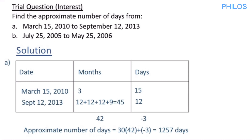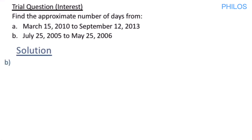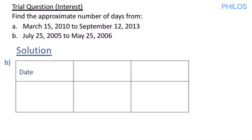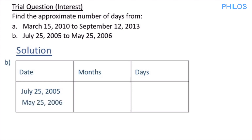Now let's solve part B. Part B asks us to find the approximate number of days from July 25, 2005 to May 23, 2006. Draw the table again with columns for dates, months, and days. The starting date is July 25, 2005. From January 2005 to July 2005 is 7 months, so we write 7 under months, and 25 under days.